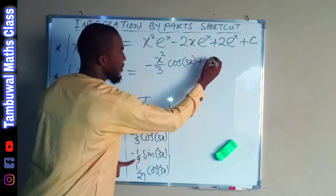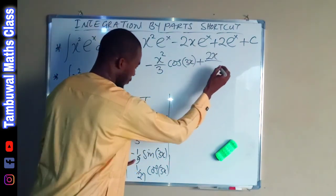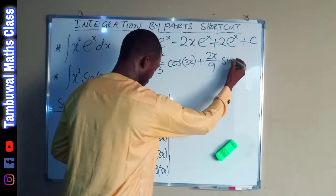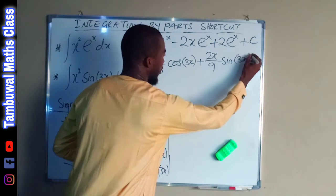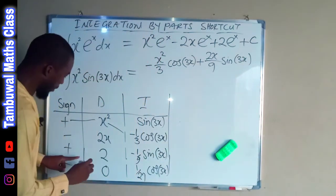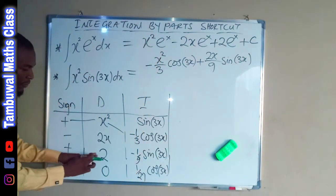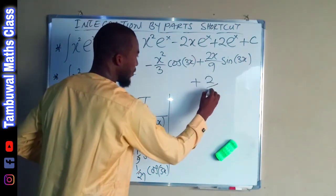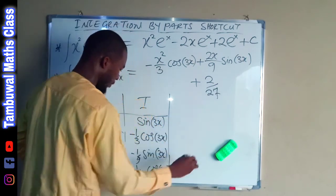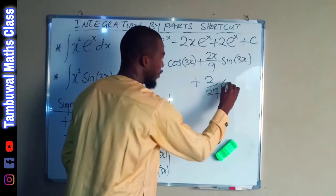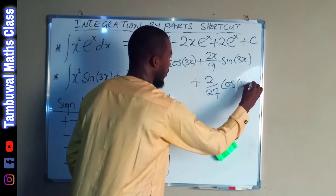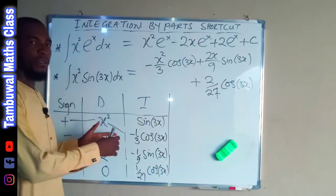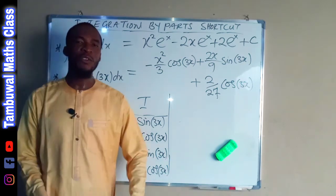The next term is 2x over 9 times sine of 3x. Then lastly we have positive 2 times 1 over 27, which gives plus 2 over 27 cos 3x. This is exactly how to perform integration by parts using this tabular shortcut. Thank you for watching.